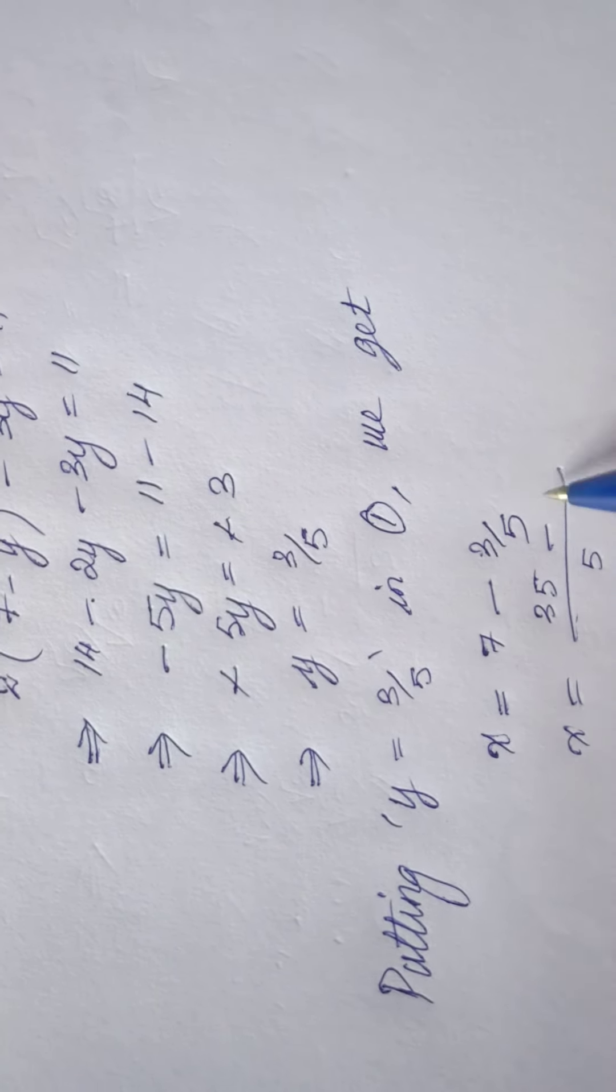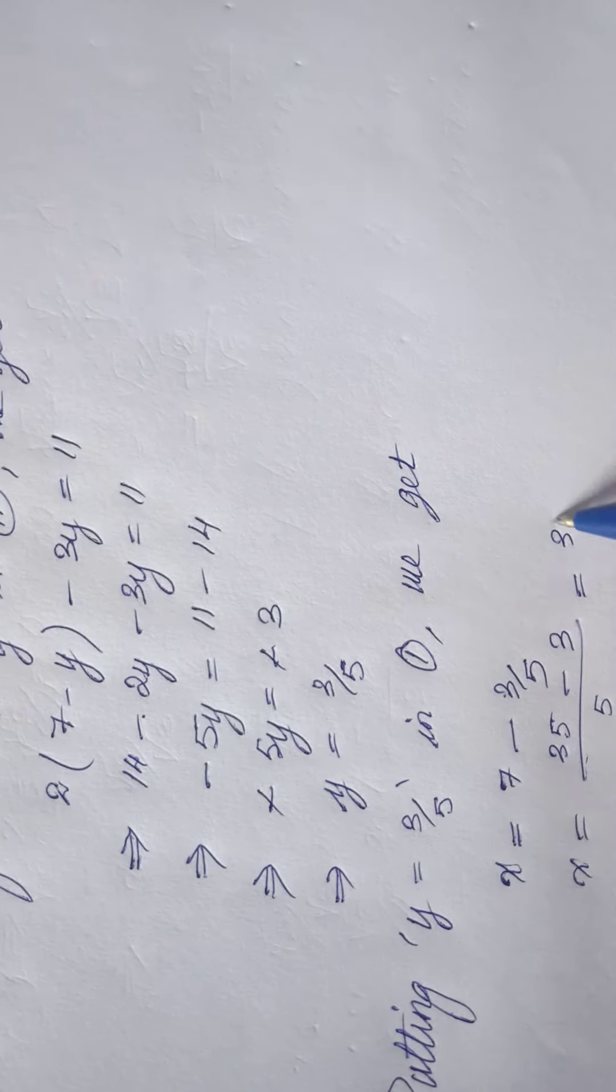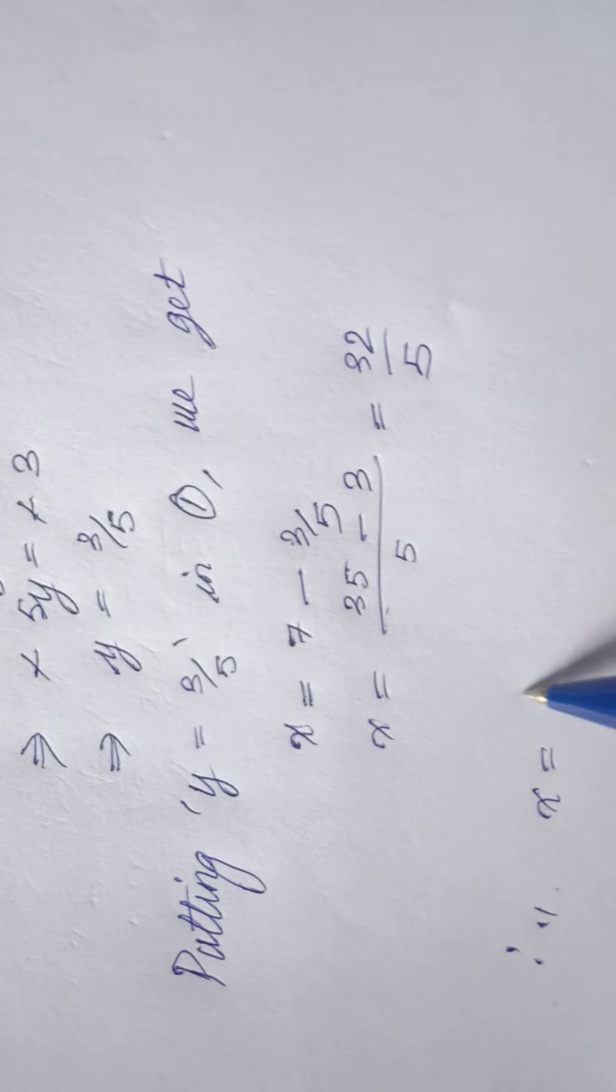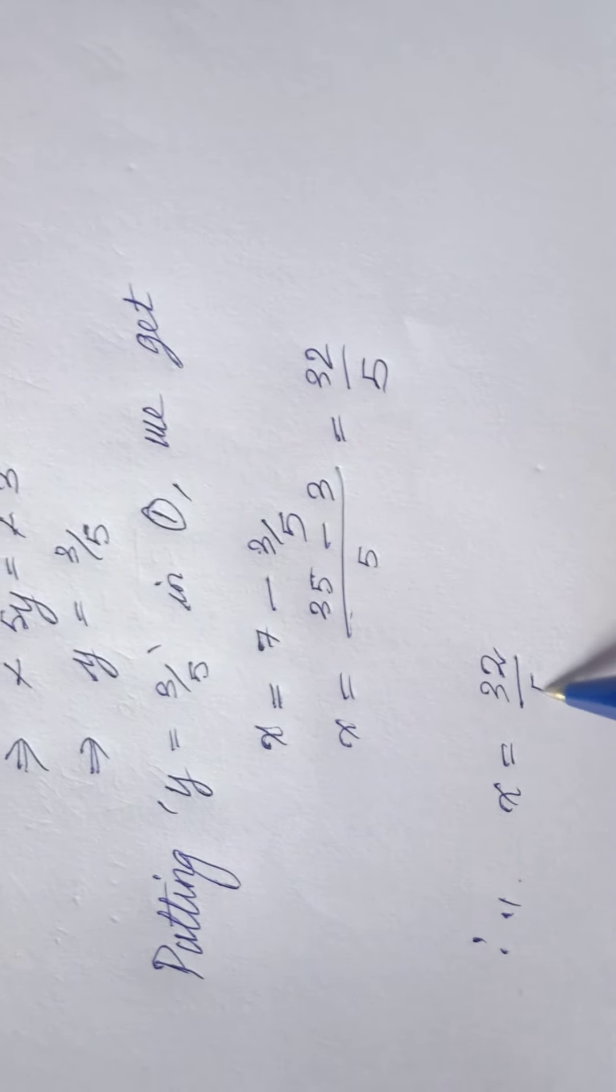If I calculate this I will be getting x equals, LCM is 5, 35 minus 3 equals 32 by 5. Therefore x equals 32 by 5 and y equals 3 by 5.